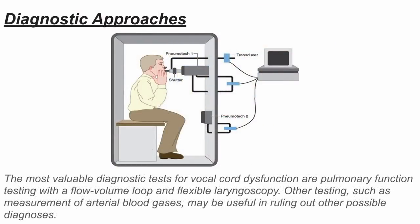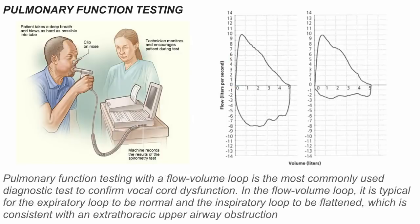The most valuable diagnostic tests for vocal cord dysfunction are pulmonary function testing with a flow-volume loop and flexible laryngoscopy. Other tests such as arterial blood gases may be useful in ruling out other diagnoses. In the flow-volume loop, the expiratory loop is typically normal while the inspiratory loop is flattened, consistent with extra-thoracic upper airway obstruction.